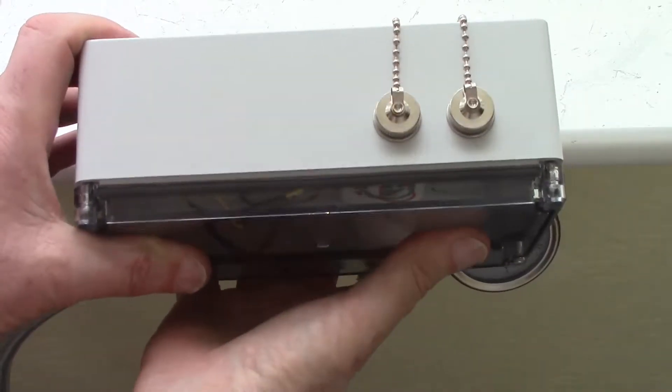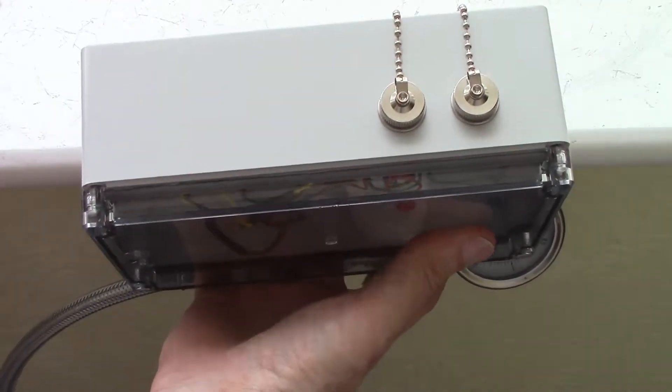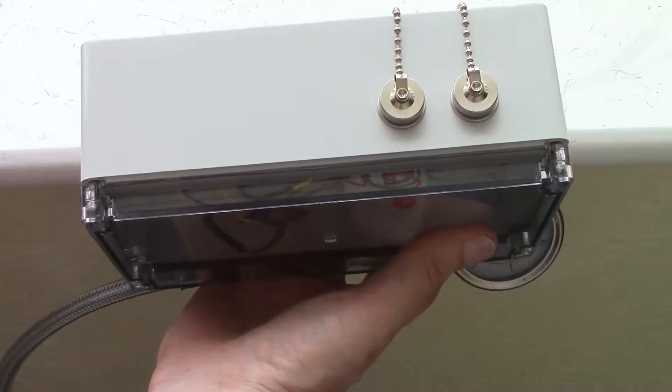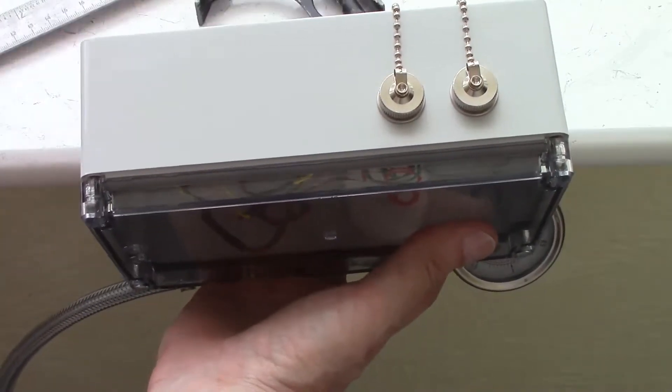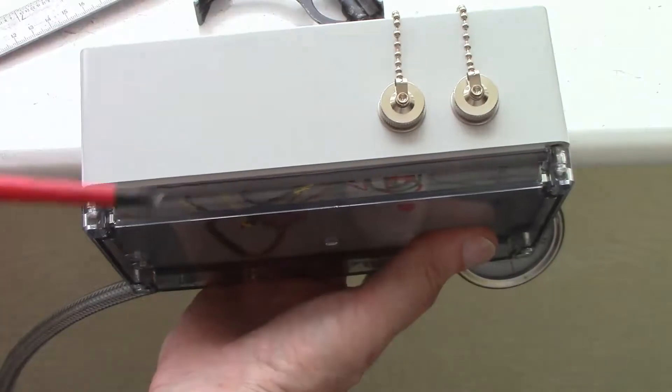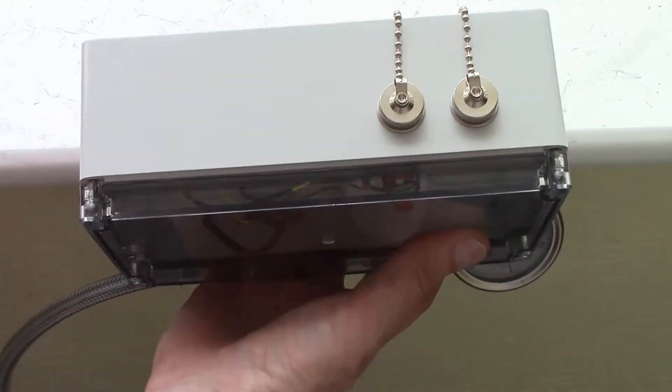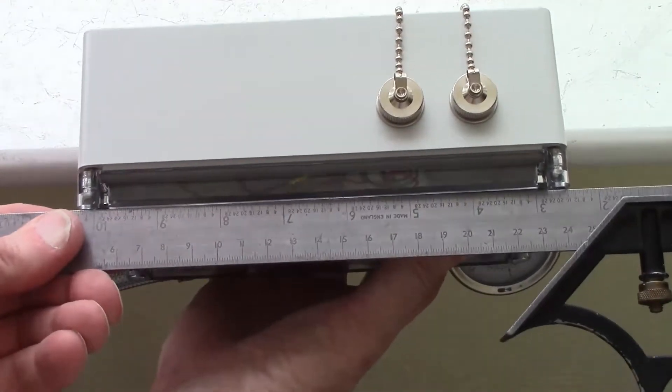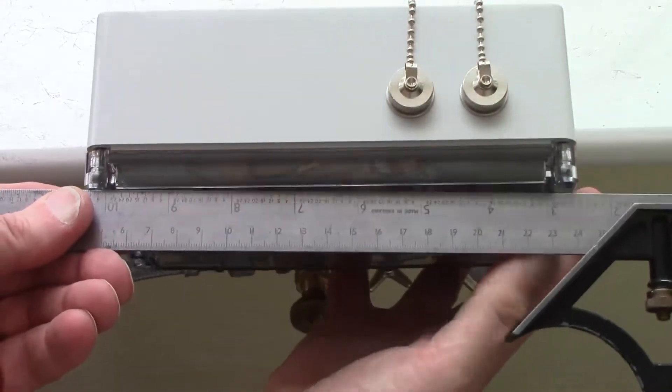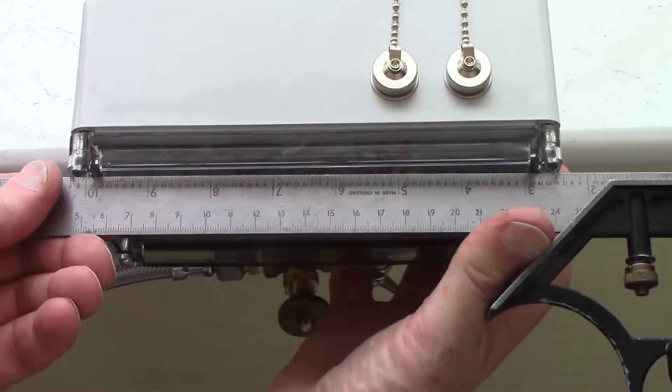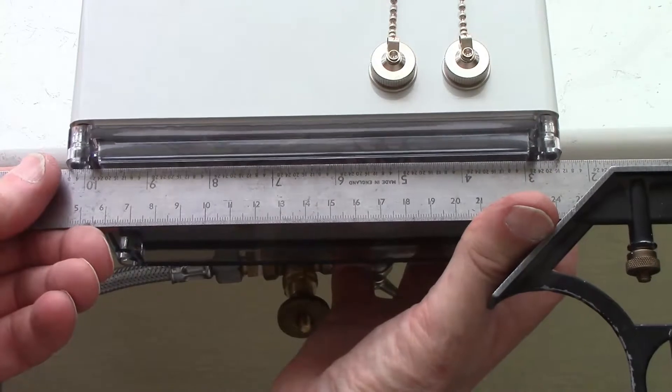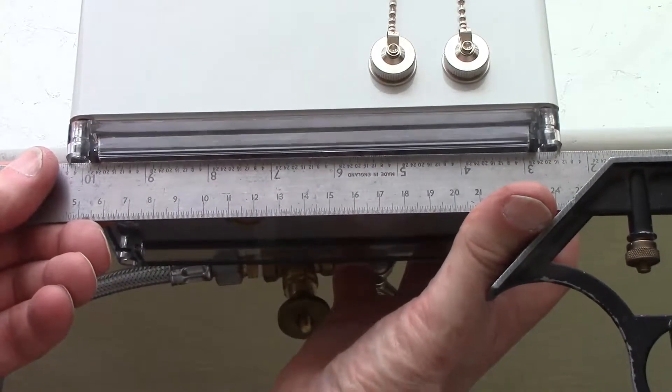Just a micro update on this pressure test I did yesterday. These two screws are loose at the moment. I've deliberately left them loose, and if I put this straight edge on here, I think it's clear that the top of the lid is straight.